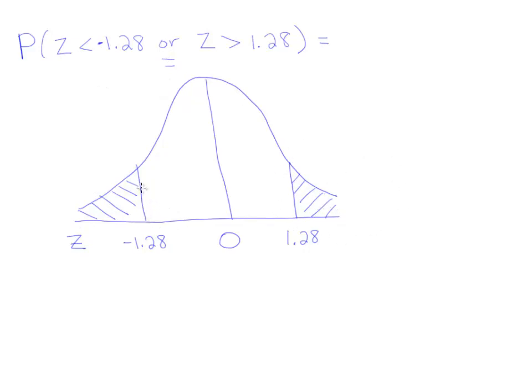If I look up 1.28 on the z-chart, I will get the area from here to here. That's not exactly what I want, but it'll allow me to get this area. And likewise, if I look up 1.28 here, it'll give me the area from here to here. Now, since these numbers are the same, looking up 1.28 is all I have to do to get this area. And this area will be the exact same thing.